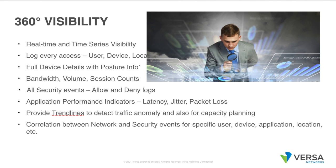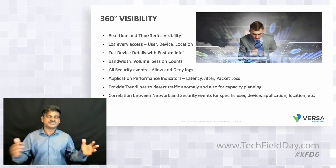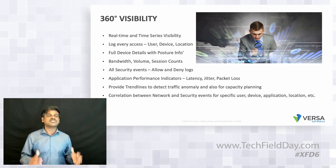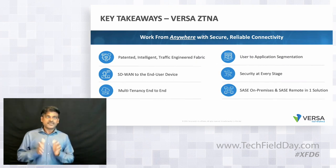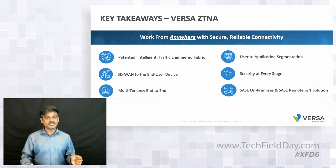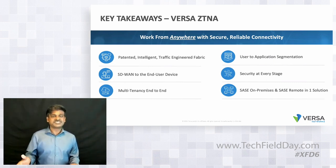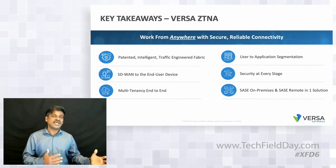The analytics portal provides a 360-degree view — real-time and time-series visibility for every user from every location: traffic volume, number of sessions, bandwidth, latency, jitter, packet loss, what was allowed and denied, how many users accessed a specific gateway at a given time, and correlated network and security events in a single pane. To summarize, Versa's ZTNA solution provides a patented intelligent traffic-engineered SASE fabric, SD-WAN to the user device, multi-tenancy end-to-end, user-to-application segmentation, security at every stage, and full ZTNA for both branch and remote users.